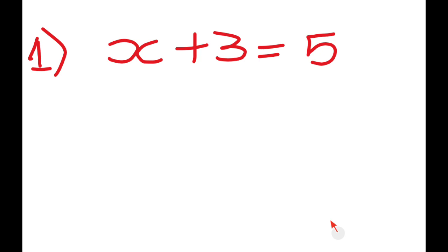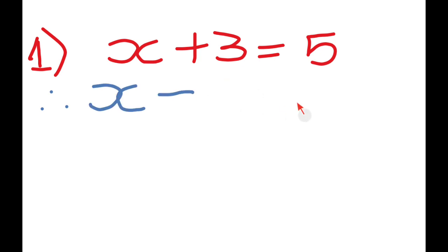Without wasting time, let's go straight to the topic. The first type of equation is when you've got your variable X added to a constant — 3 in this case — equated to another constant, which is 5. What you do is simply write 'therefore.' Remember, mathematics is a language, so keep it simple and understandable. You go: therefore X equals — take everything that does not have X to the right hand side, so that is equals to 5.